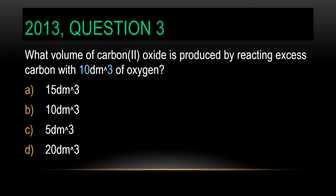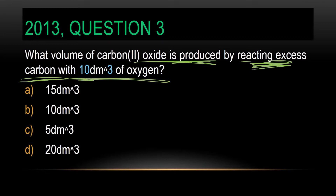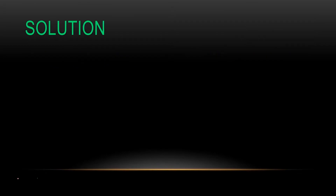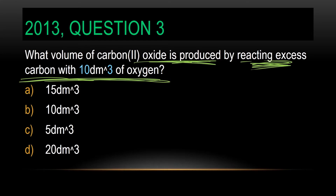We did questions like this before that look similar. Now, what volume of carbon monoxide is produced? 'Produced' — that is our product. So mark this: it's produced by reacting — our reactants — by reacting carbon with oxygen. From here, we can even get our equation.